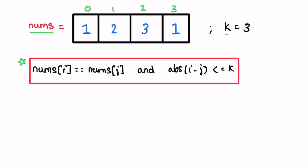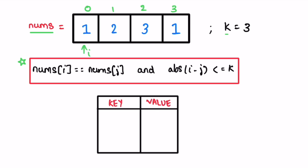To solve this question we're going to use a hash map where the key is the array element and the value is its last appearing index position. Let's start filling the hash map by iterating through the nums array from left to right. i is pointing at the first element. We draw the hash map — the first element is 1. We check if it is present inside the hash map. It is not present, so we add it as a key and set its index, which is zero.